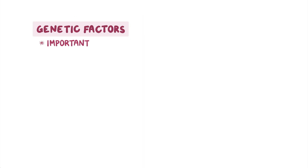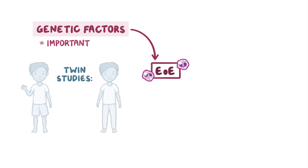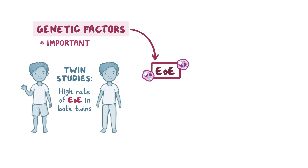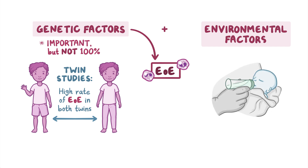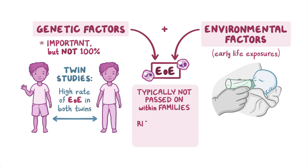Genetic factors are important in EOE, as demonstrated by twin studies which show a high rate of EOE in both twins, but this is not 100%, and environmental factors, especially early life exposures, play a role in developing eosinophilic esophagitis. EOE is typically not passed on within families, and the risk for family members of a person with EOE to develop EOE is less than 5% unless there is an affected twin.